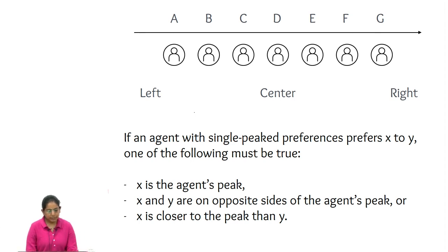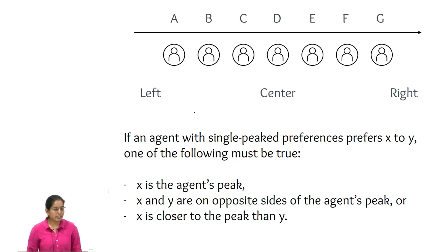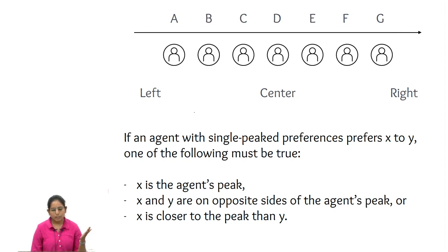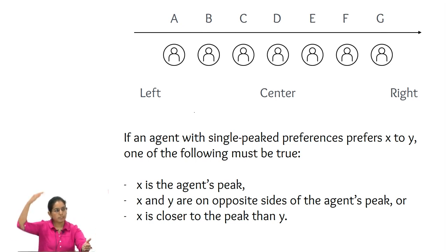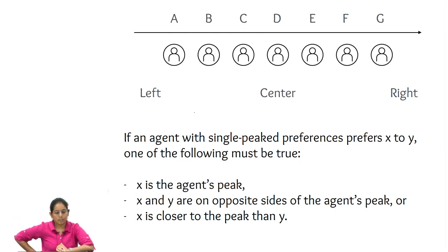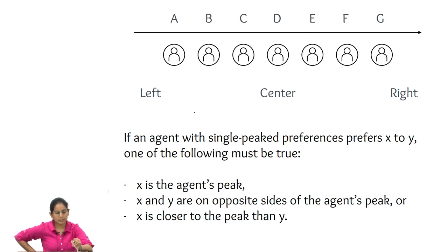The situation we consider is: what if your profile only consists of preferences which are single-peaked? That means there exists a universal ordering on candidates with respect to which every vote is a single-peaked order. Voters can all have different favourite candidates, but once you fix your favourite, you must have this diminishing preference on either side of the harmonious order, with flexibility in how you interleave. That is the kind of profile we will concern ourselves with.